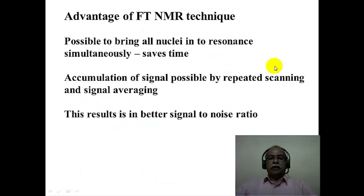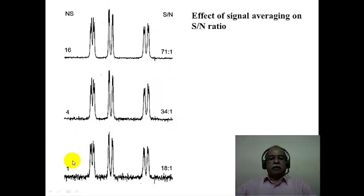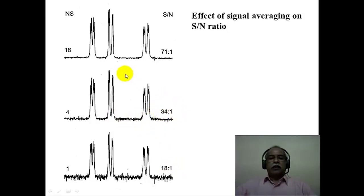The advantage of FT-NMR is that all nuclei are brought into resonance simultaneously, saving time. Repeated scans and signal averaging improve signal-to-noise ratio. For example, a single scan gives S/N of 18:1, an average of 4 scans gives 34:1, and an average of 16 scans gives 71:1. Noise is random and cancels out during averaging, while the signal builds up. The carbon-13 spectrum is usually recorded under broadband proton decoupling — a separate proton frequency is applied to decouple all proton-carbon coupling, so each chemically distinct carbon appears as a single line.